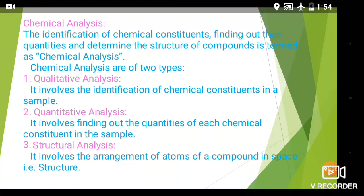What is chemical analysis? Chemical analysis is nothing but the identification of chemical constituents, finding out their quantities, and determining the structure of a compound — this is termed as chemical analysis. Chemical analysis gives knowledge about the amount of constituent, the structure of compound, and the chemical composition of the compound. In chemical analysis, we identify the given constituent, find out their quantities, and determine the structure of the compound.